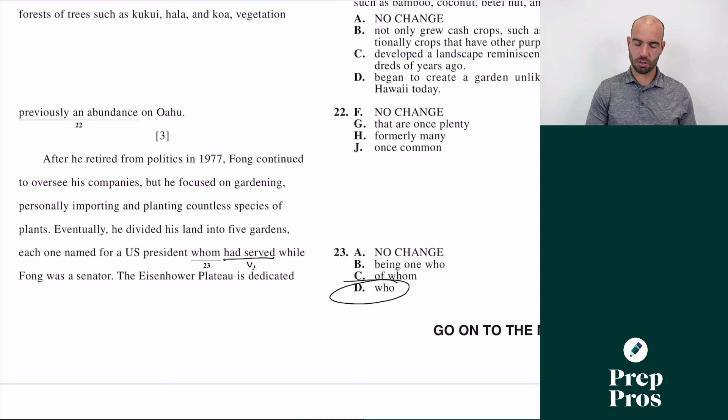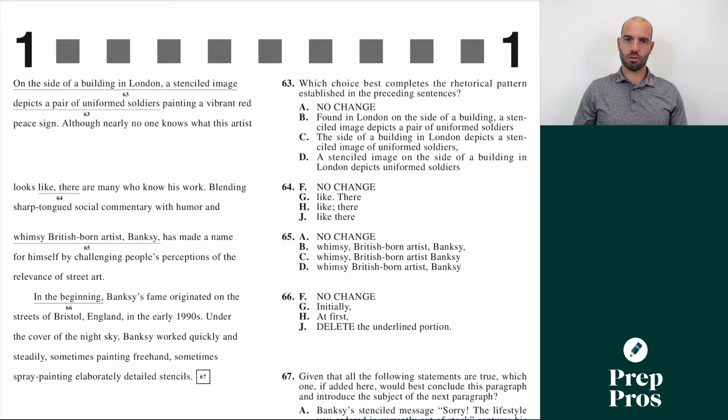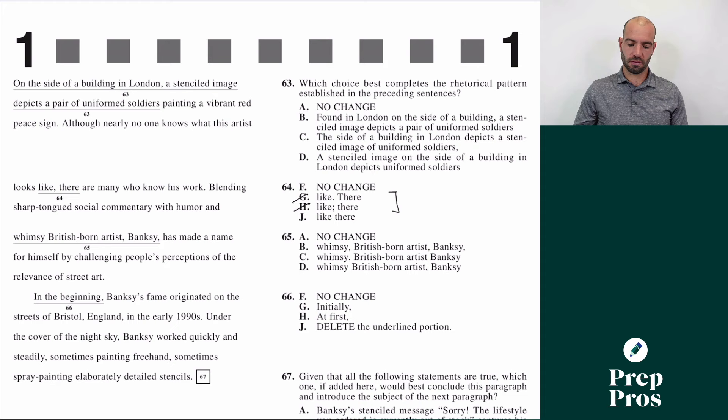On the ACT, a semicolon is the exact same thing as a period. A semicolon is used correctly when it is linking two complete independent sentences. So if we ever see something like here in question 64, where we see two answer choices like G and H that have the same words and one is a period and one is a semicolon — well, a semicolon is the same as a period, which means both of those answer choices are wrong. This happens almost every single test — when you see this, cross both of them off.